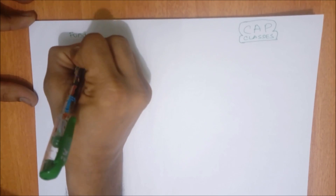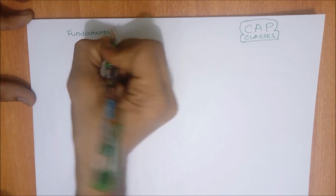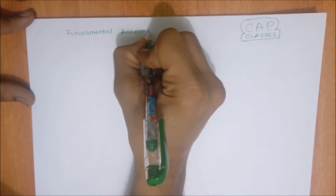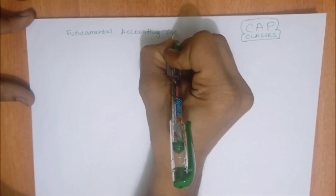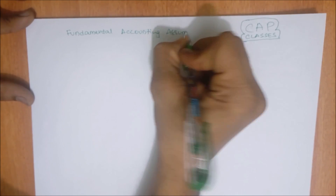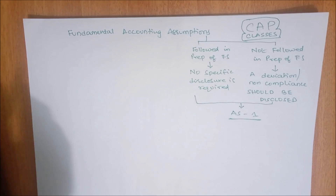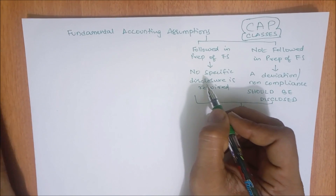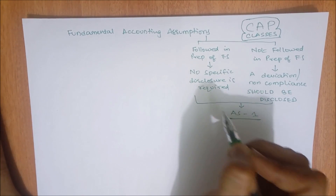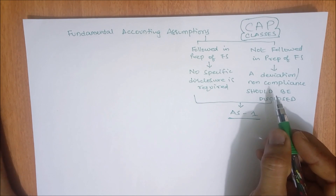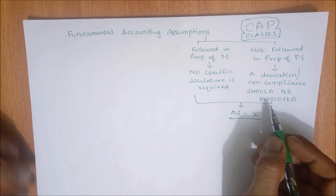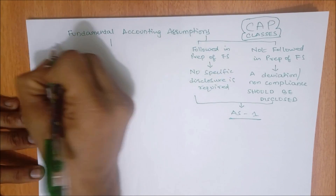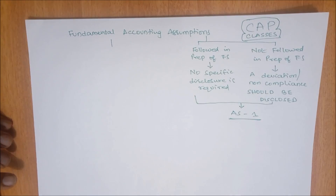There are three fundamental accounting assumptions. Remember this: if fundamental accounting assumptions are followed, no specific disclosure is required. If fundamental accounting assumptions are not followed, then specific disclosure is required.